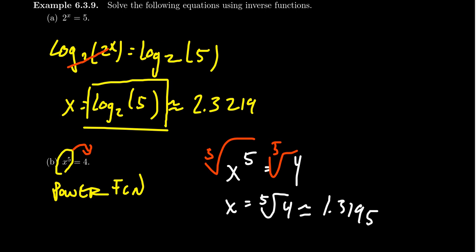But on the second example here, we don't use logarithms. We use radicals. We have to use, in this case, the fifth root. And that's because the base is the variable and the exponent is a constant.